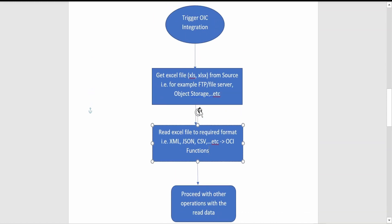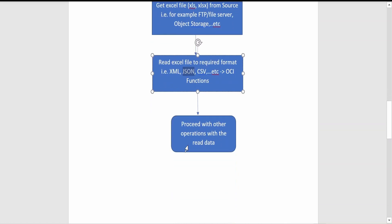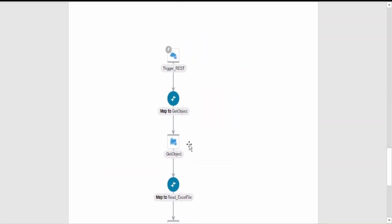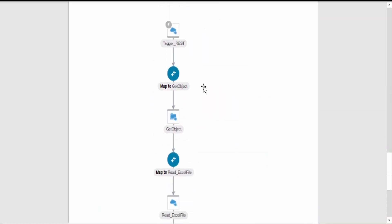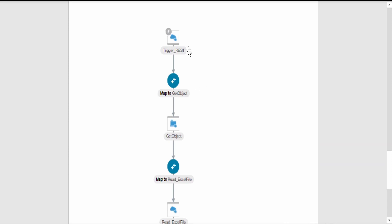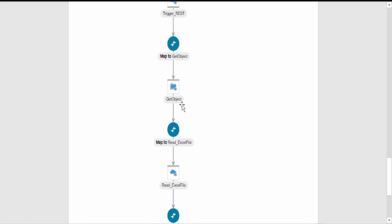There are only two steps involved in reading an Excel file: one is to get the file from the source and send it to the OCI function, and convert it to the required format. I have put a screenshot of my integration which I have created. We will go through the integration code action by action and discuss in detail each and every configuration.